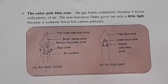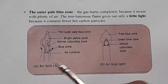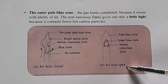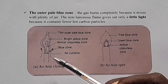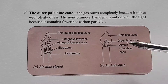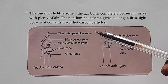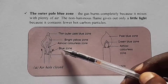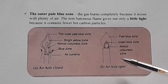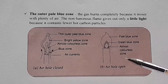Looking at the diagrams for both flames: with the air hole closed, that's luminous flame; when the air hole is fully open, that's non-luminous flame. Luminous flame has four regions or zones, while non-luminous flame has three zones. In luminous flame we have: the blue zone, the almost colorless zone, the bright yellow zone, and the thin outer pale blue zone. In non-luminous flame we have: the almost colorless zone, the green-blue zone, and the pale blue zone.